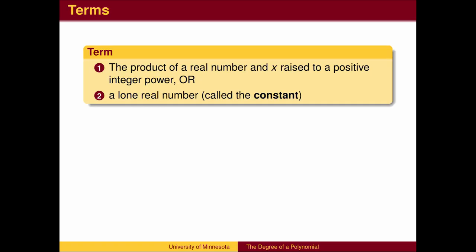Specifically, a term is either the product of a real number and a positive integer power of x, or a real number by itself called a constant.